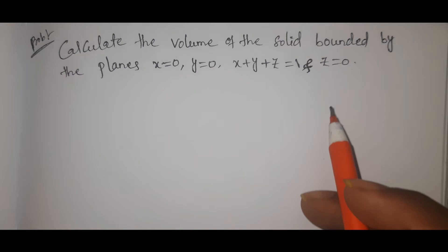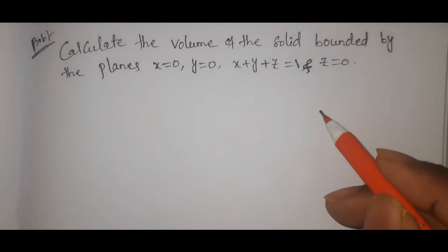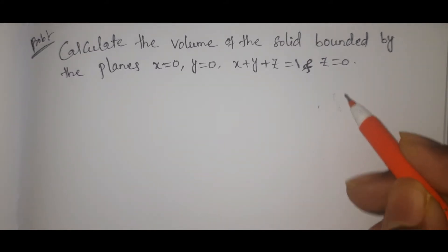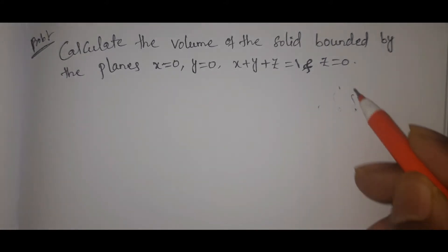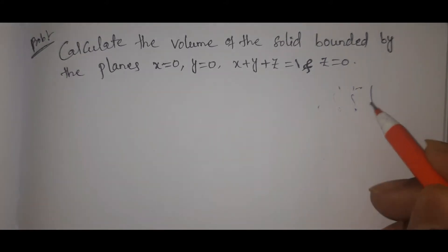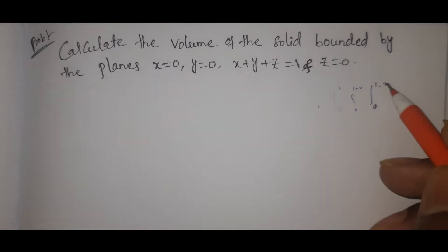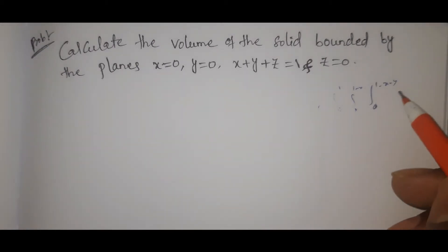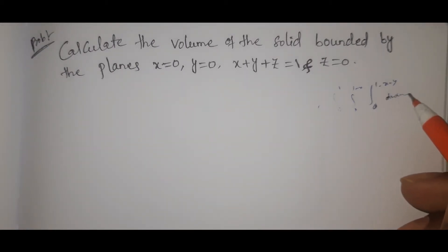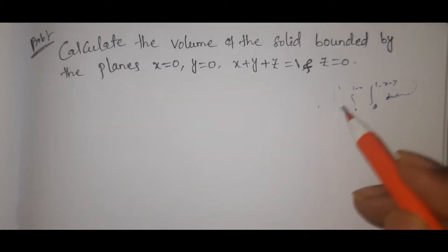The question is: evaluate the triple integral. The limits are: x equal to 0 to 1, y equal to 0 to 1 minus x, z equal to 0 to 1 minus x minus y, and we evaluate dz dy dx.